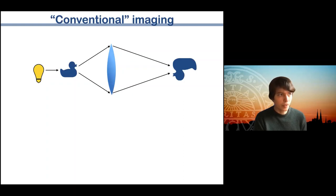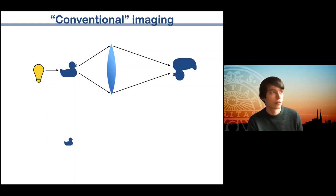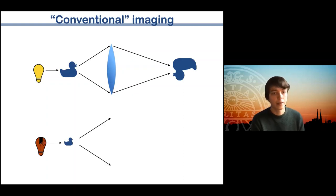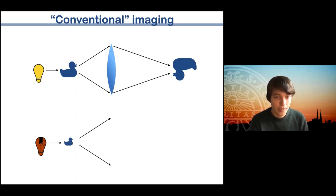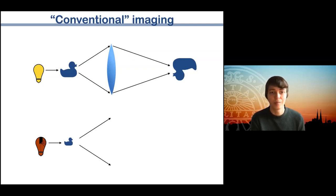If you want to use this method to study really small things, optical light won't work — you need something with a shorter wavelength, like an X-ray source. Light diffracts in the same way from smaller objects, but I haven't drawn a lens there because lenses are problematic for X-rays. As you might know from medical X-rays, X-rays just go straight through most things, including a lens.